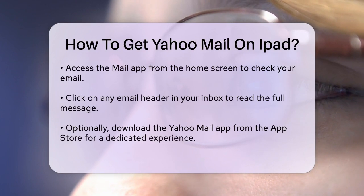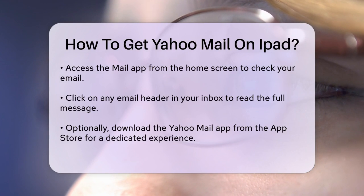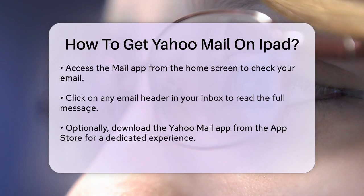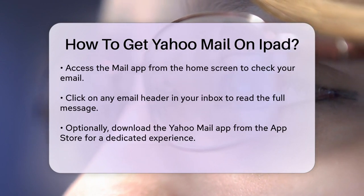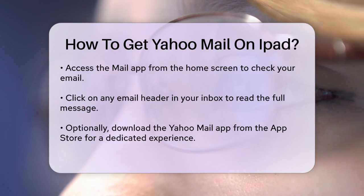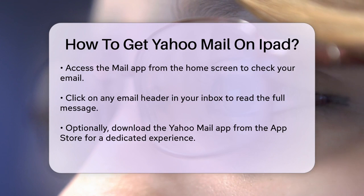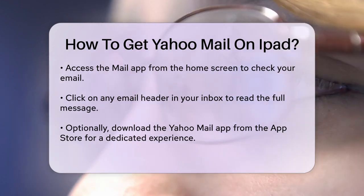If you prefer using a dedicated app, you can download the Yahoo Mail app from the App Store. Open the App Store, search for Yahoo Mail, and install the app. Once installed, open the Yahoo Mail app and enter your Yahoo account username or email address and password to log in. This will allow you to send and receive emails directly through the app.